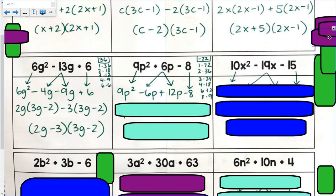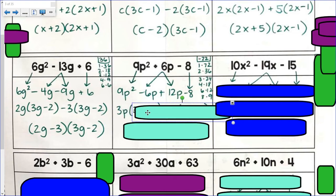And negative 6p and a positive 12p will add up to get negative 6. And those two numbers will multiply to get that negative 72. First GCF here is 3p. If I factor out a 3p, I'm left with 3p minus 2.